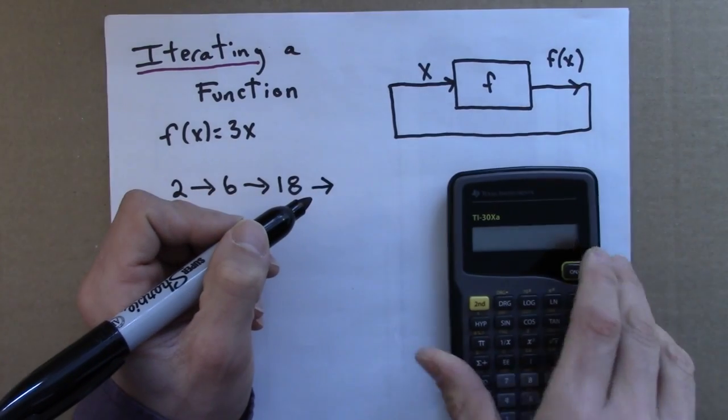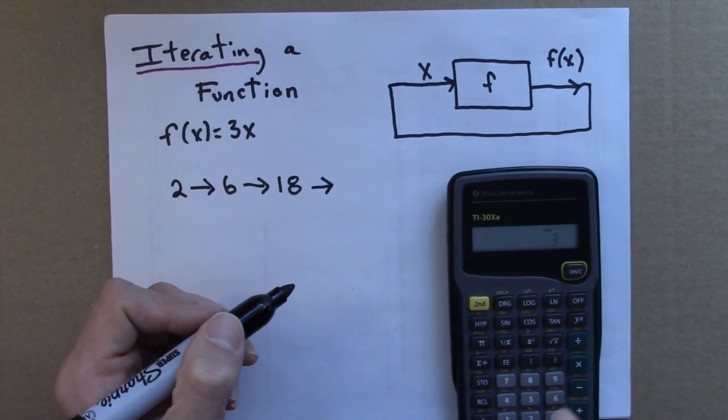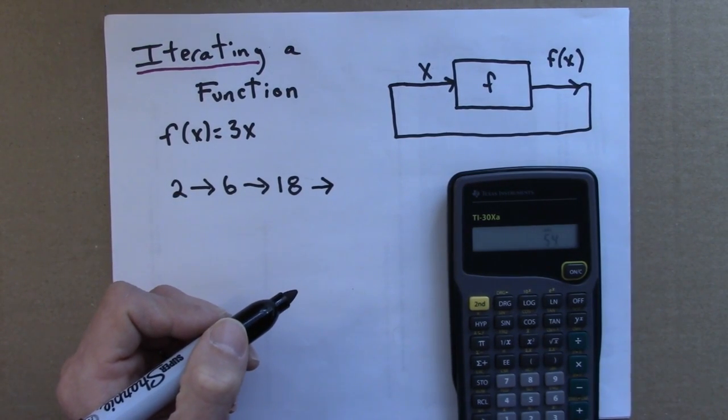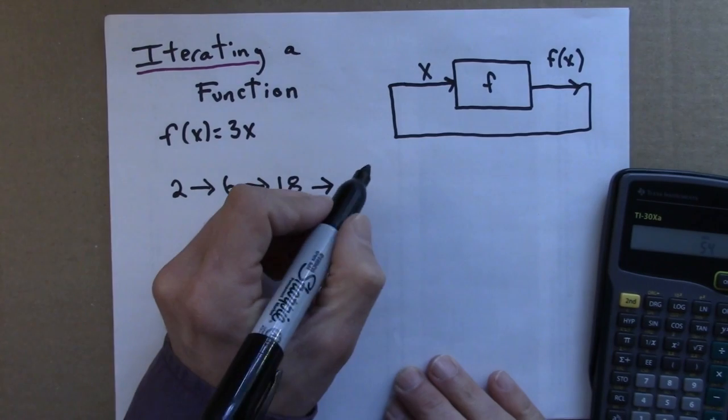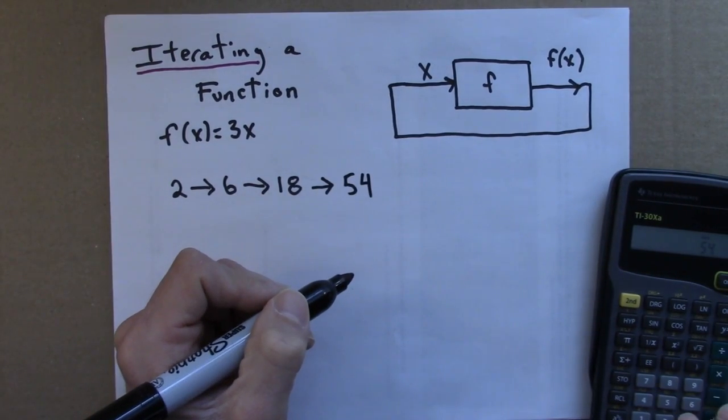For the next one, I'll need to triple 18. Maybe if I'm not feeling confident about my multiplication, I could do it on a calculator. And then I could triple that again.